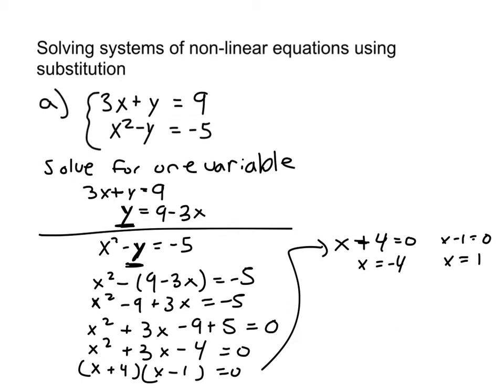So those are two possible values of x. I need to find the corresponding value of y in each situation. So to do that, I'm going to be using this equation for y. So I'll have y equals 9 minus 3 times negative 4, 9 plus 12, which is 21. So y equals 21. And then the next one, I have y equals 9 minus 3 times 1, which is 6, 9 minus 3.